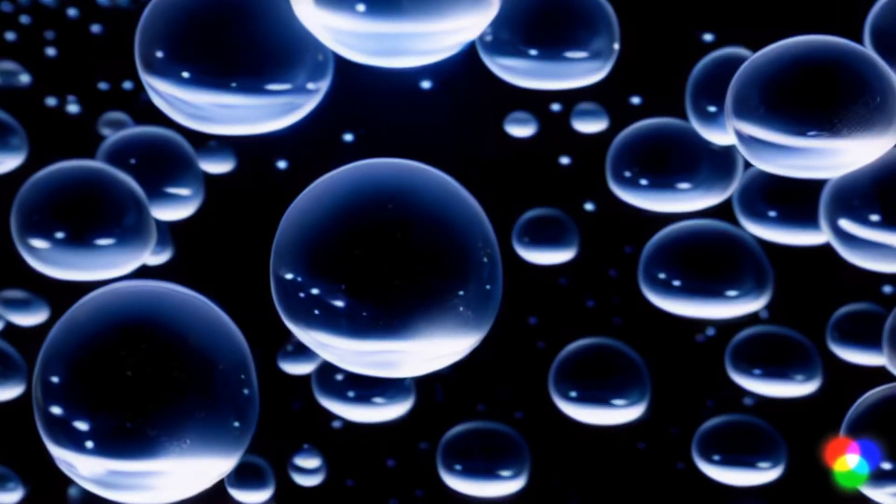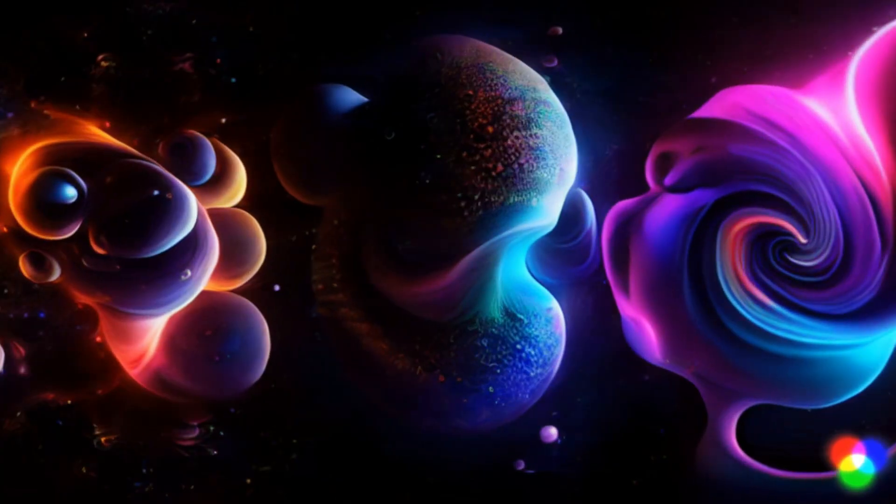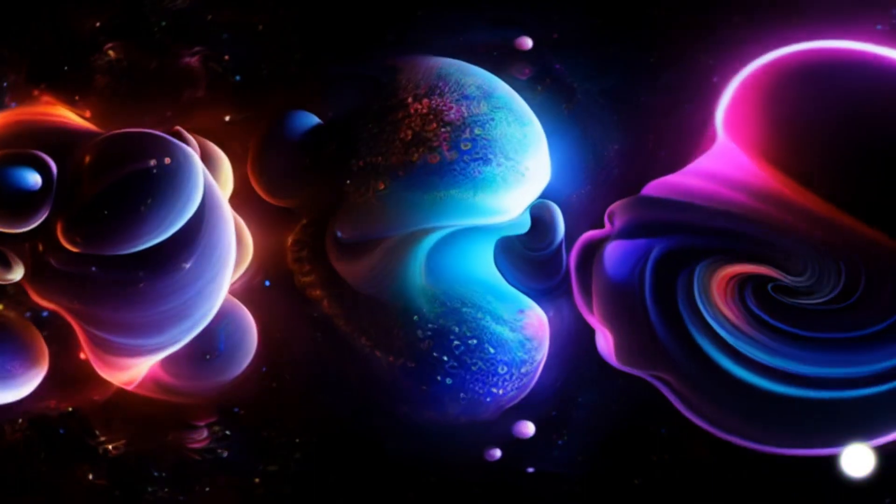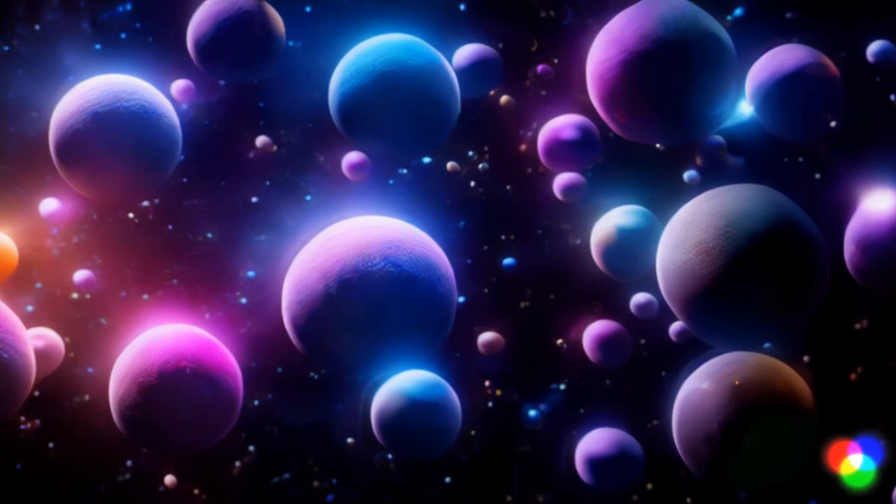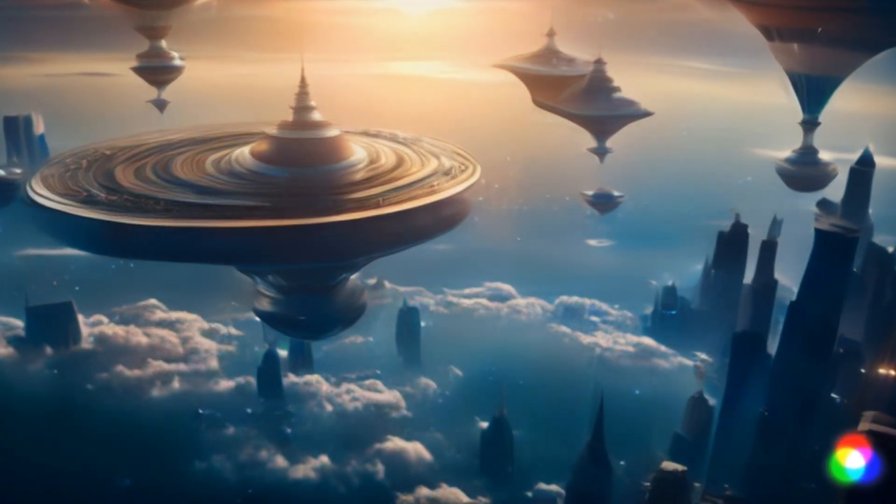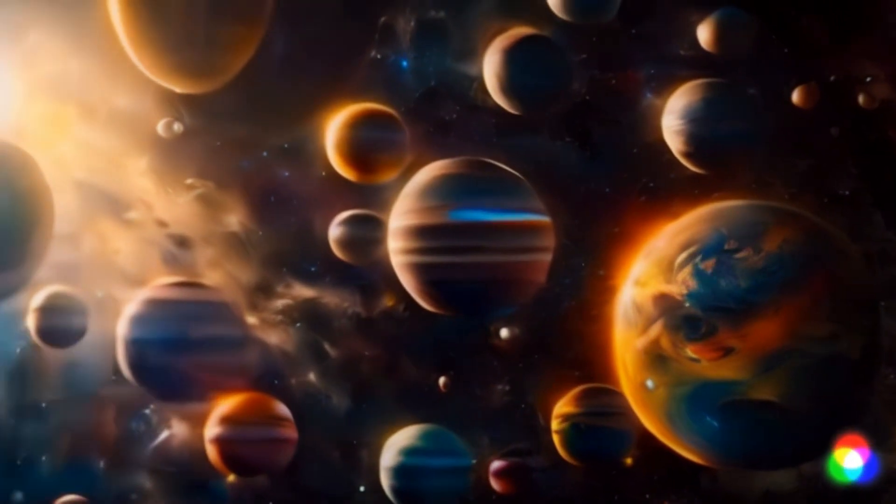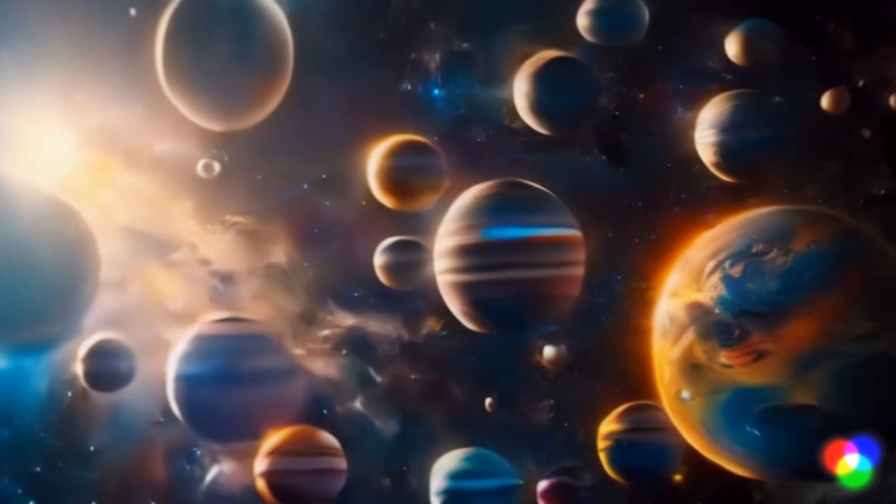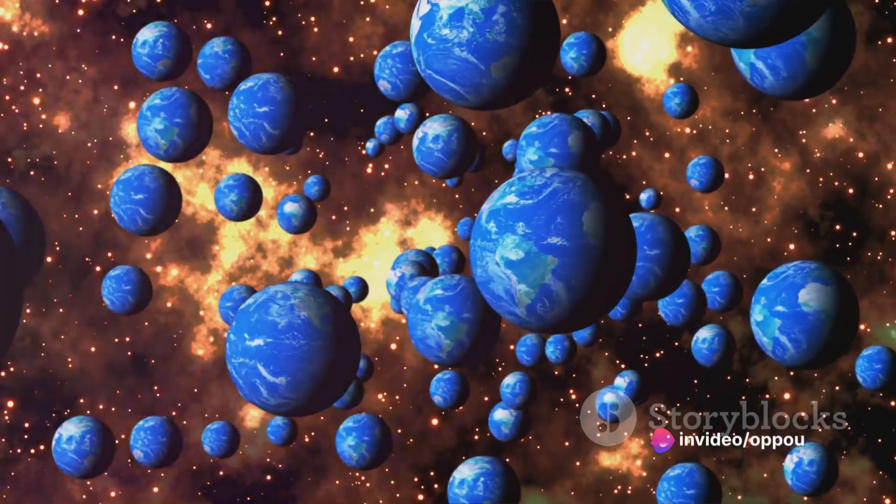The many worlds theory suggests that there exist infinite parallel worlds, each representing a different possible outcome of every decision we make. Imagine standing at a crossroads. You decide to take the left path. According to the many worlds theory, at that very moment, another version of you takes the right path in a different universe.